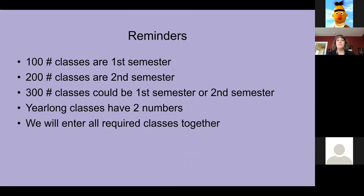As reminders as we go: we will start with required classes. All courses have a course call number. If the class has a 100 number, it's first semester. A 200 number means second semester. Year-long classes have two numbers, so you always have to click two numbers for those. If the class is just one semester, it will be a 300 number - that might be first or second semester, we aren't sure yet.